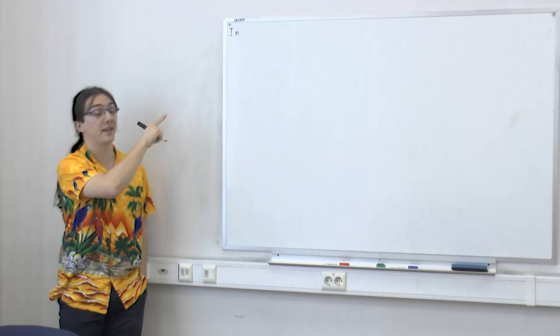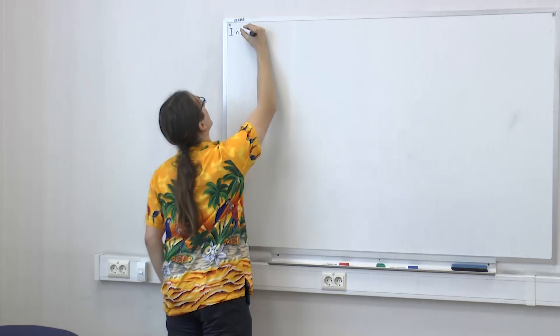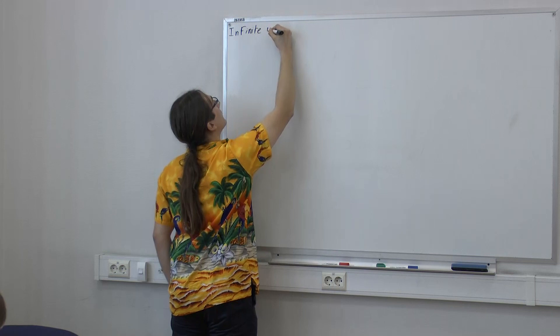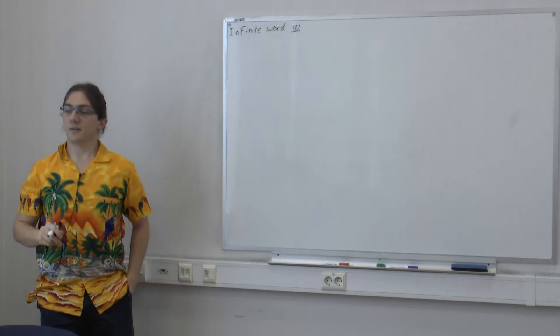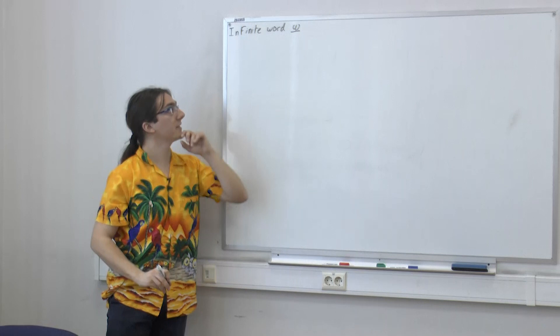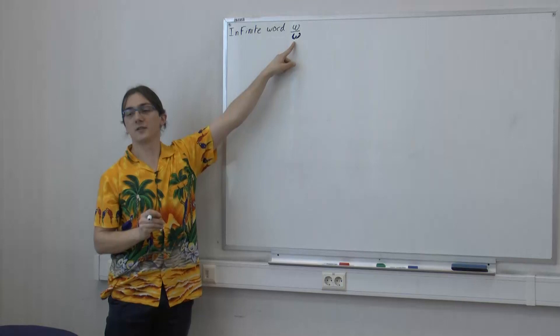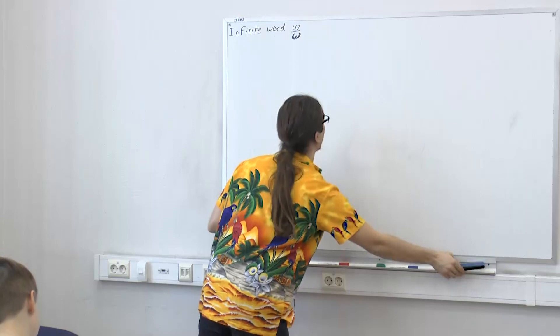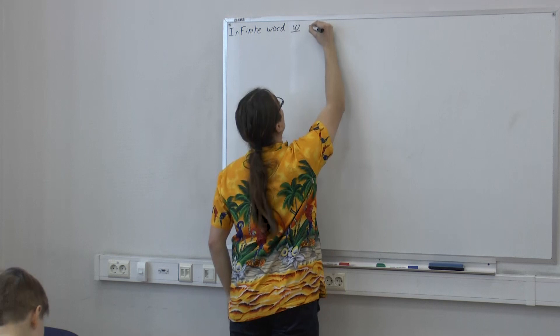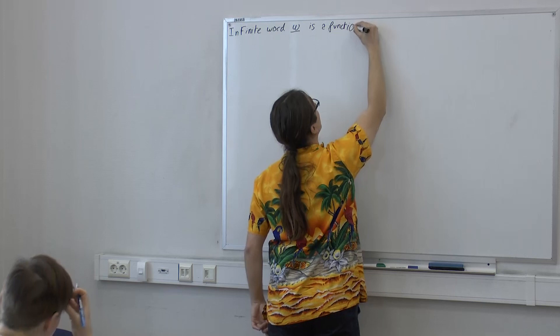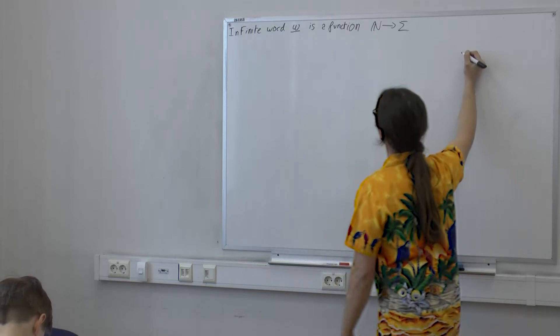So, infinite words. I write them with w underlined. On a computer-typeset document I would use a bold w, but I won't make a bold letter every time here, so I will underline them — it's just so you can quickly spot what is infinite and what is finite. Formally, an infinite word w is a function — a sequence of letters — from the natural integers into your alphabet sigma. I usually take zero in the set of natural integers.